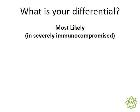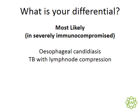Our first consideration is always esophageal candidiasis, but there are other important differentials. Notably, lymph node compression on the esophagus — most commonly due to TB, or any condition causing lymph node enlargement. Viruses such as CMV or herpes simplex virus can also cause severe ulceration of the esophagus in patients with very low CD4 counts.